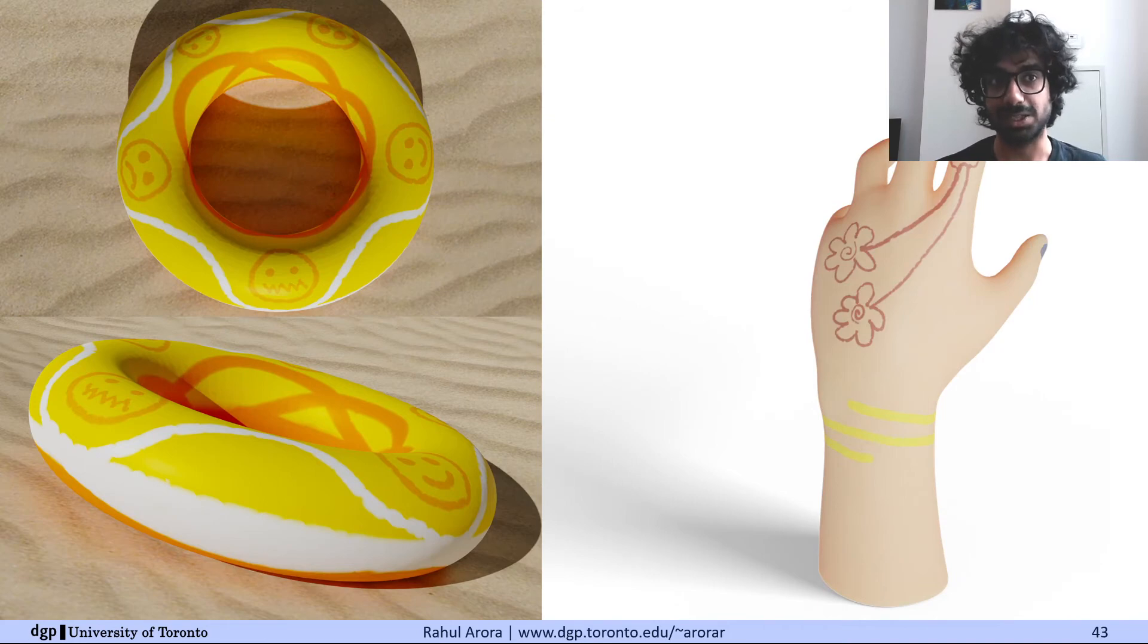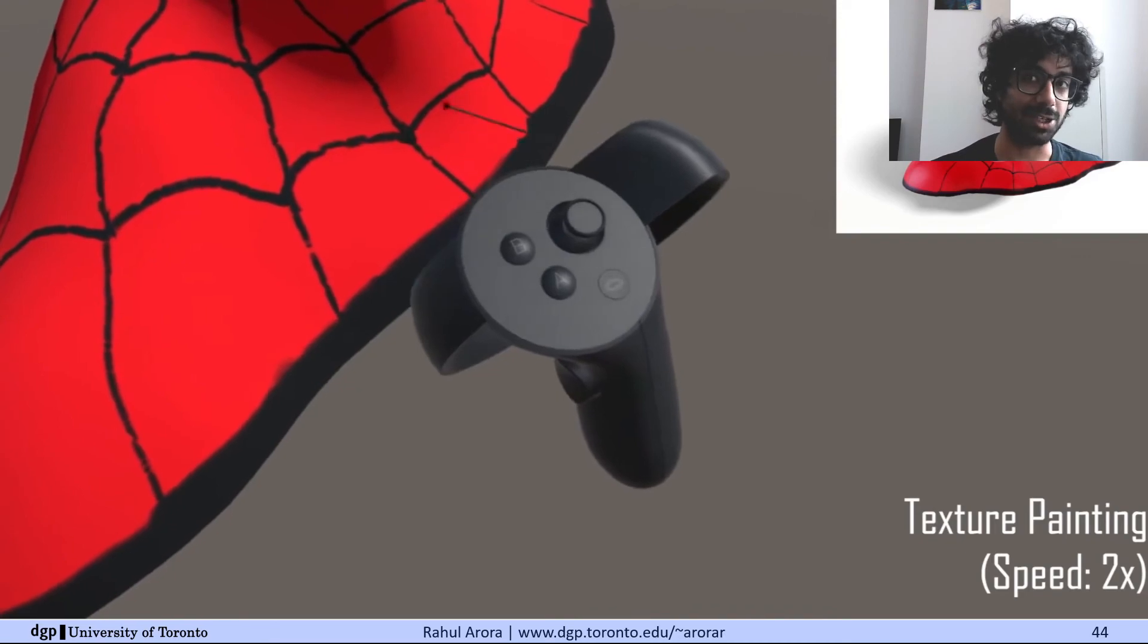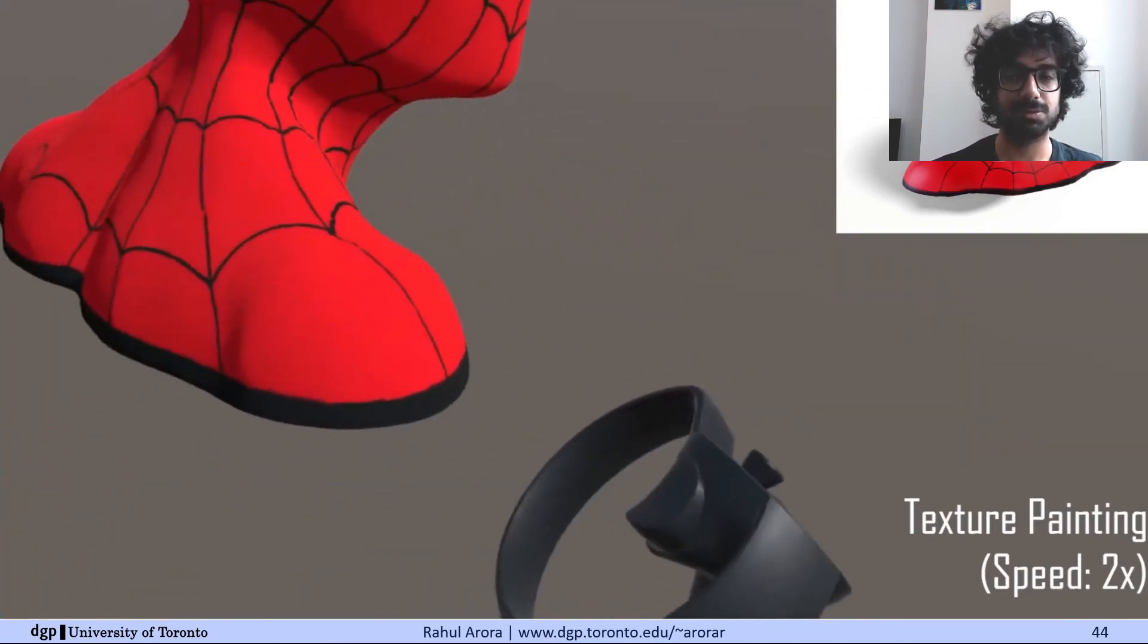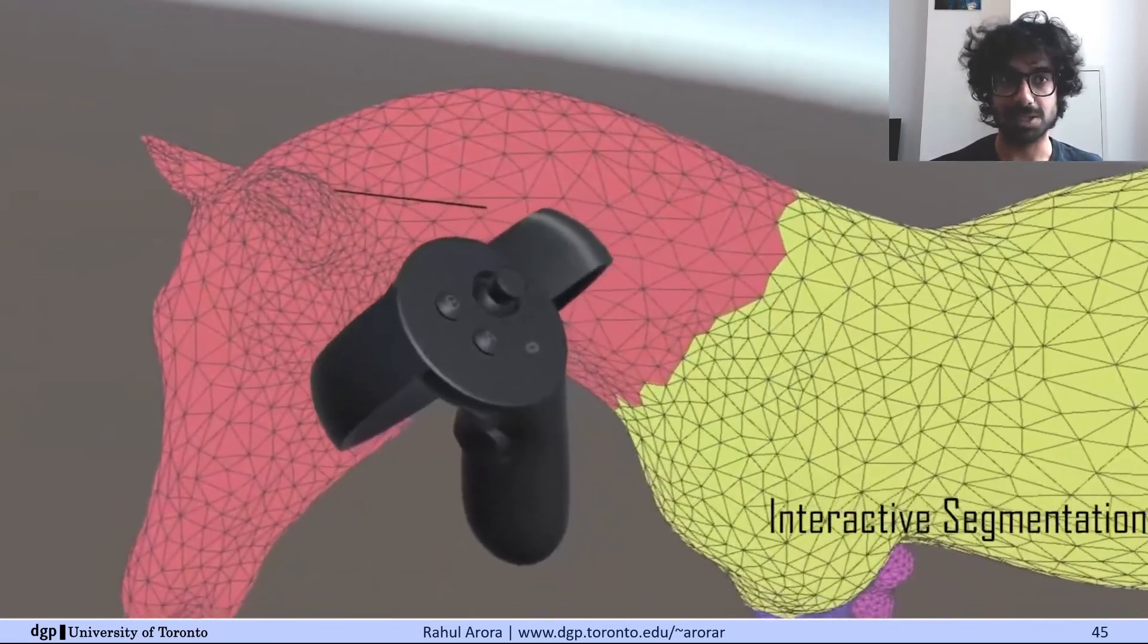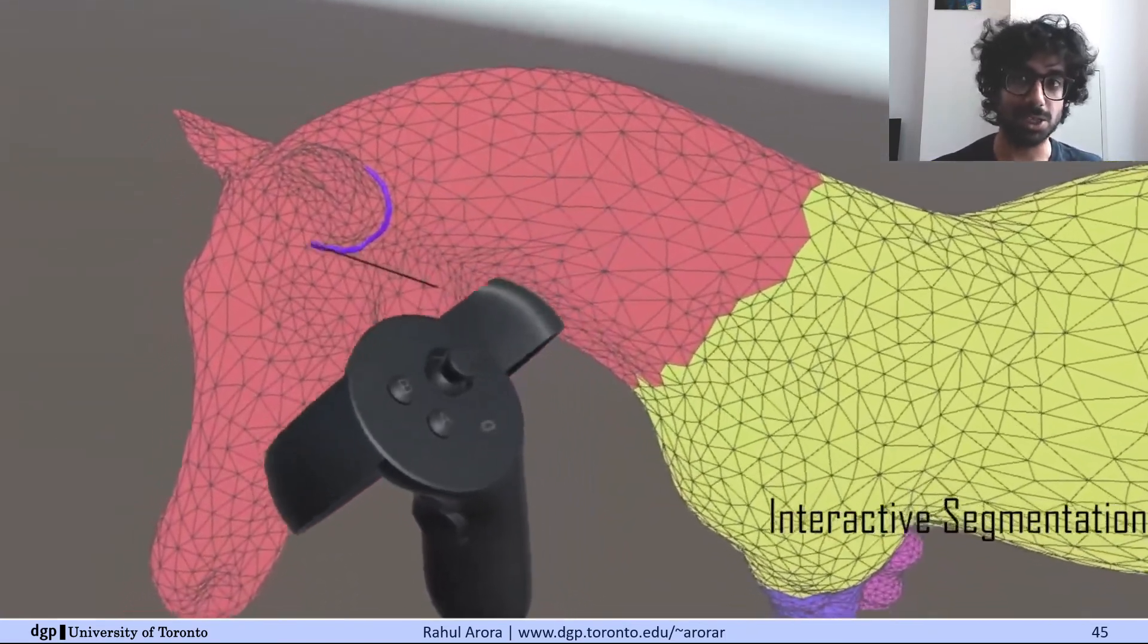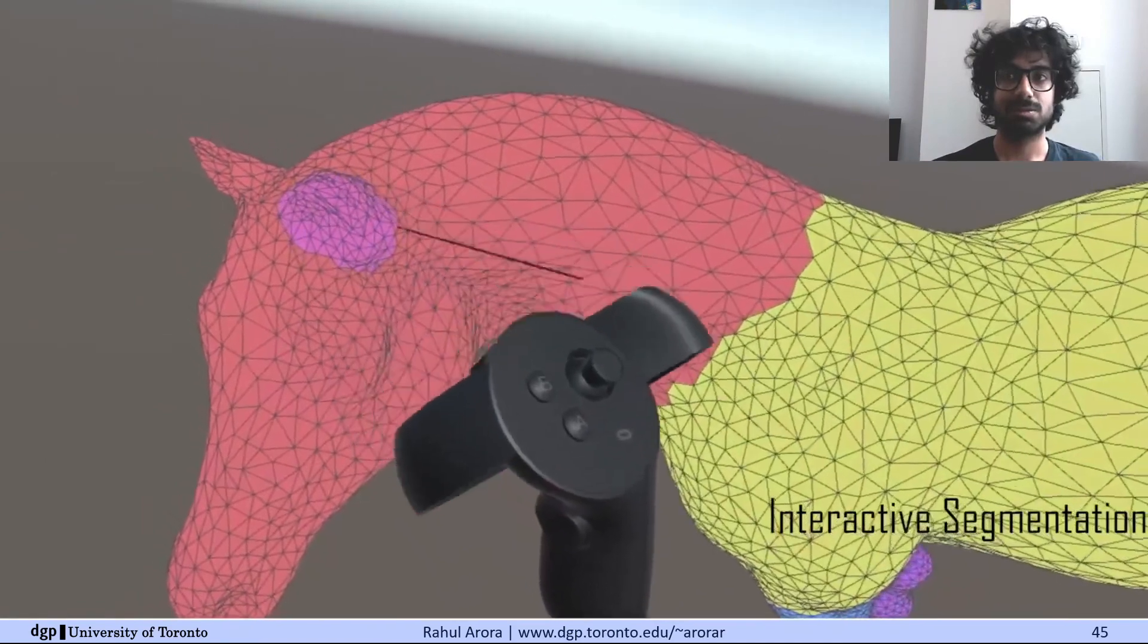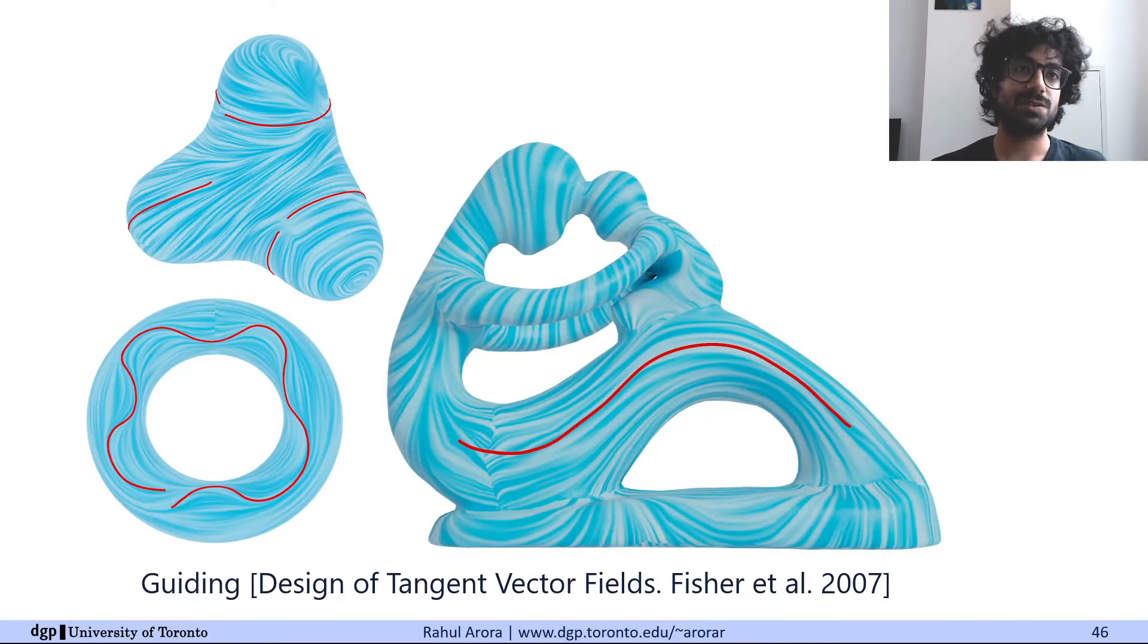Of course, stroke mimicry can be used to paint textures, and here are a couple of results. You can see the painting in action for the Spider-Man bust. Such curves can also be used for part selection or interactive segmentation. And finally, we can use curves on surfaces to guide geometry processing applications. Here are some examples of vector field design, using the algorithm of Fisher and colleagues. As you can see, drawing curves on surfaces is a fundamental interaction, which can help with many different applications.